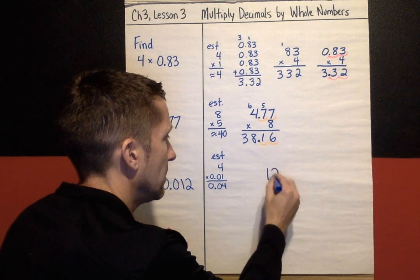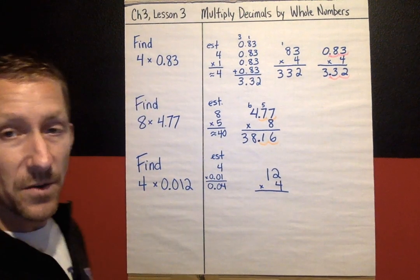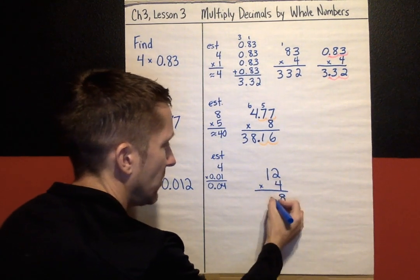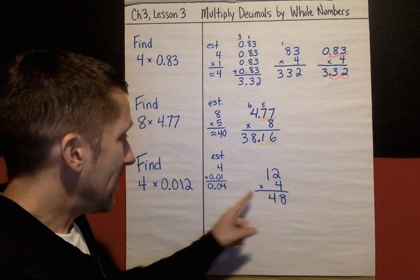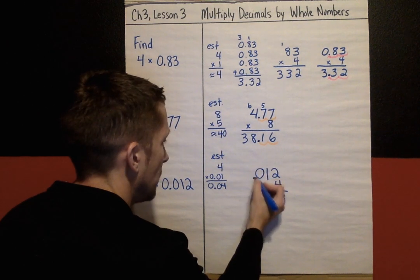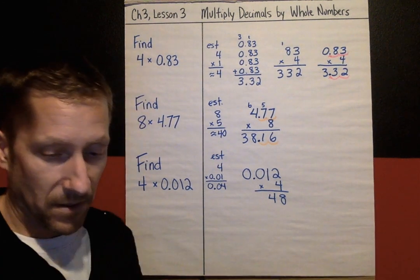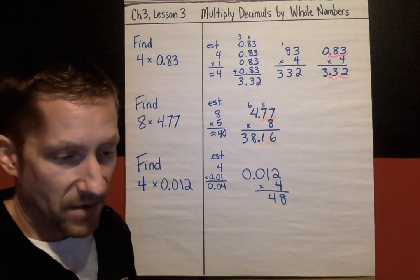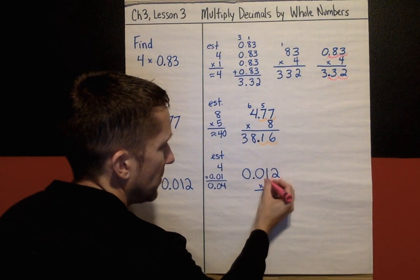So again, I'm going to put this number on top because it has 2 digits. 12 times 4. Pretend there's no decimal and just multiply. 4 times 2 is 8, and 4 times 1 is 4. So I got 48. Now I'm going to go back and put the decimal where it should be. I need to count my decimal jumps. Count my jumps from this side: 1, 2, 3 jumps. I need 3 jumps in my answer.